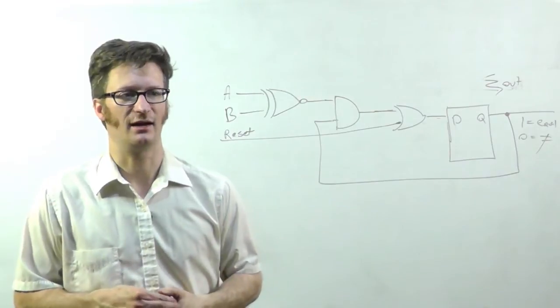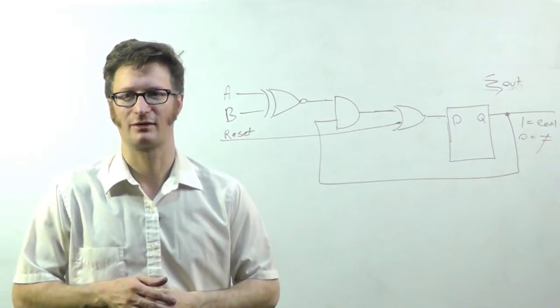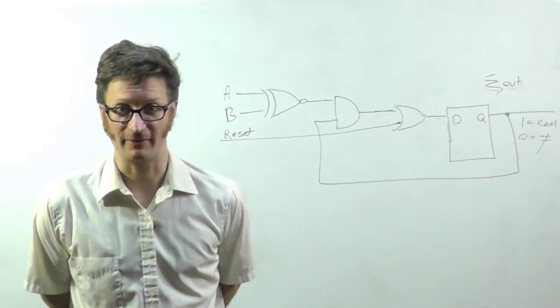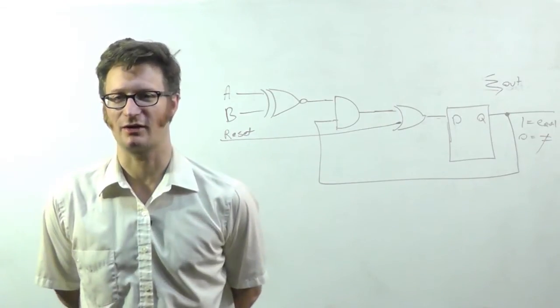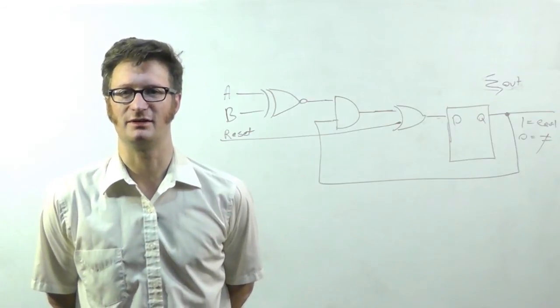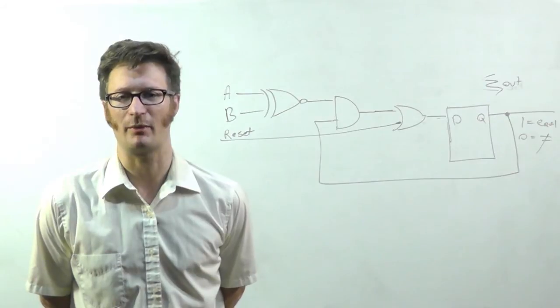So that was a two-number serial equality comparator. If you found this video interesting or at least useful, take a look at my YouTube channel where I have other videos about digital logic, or I have a master index over at robotbrigade.com.